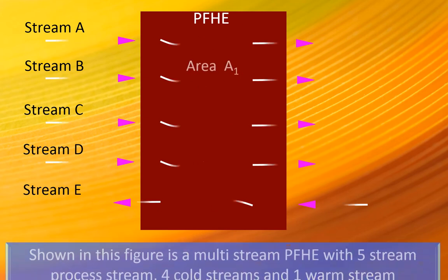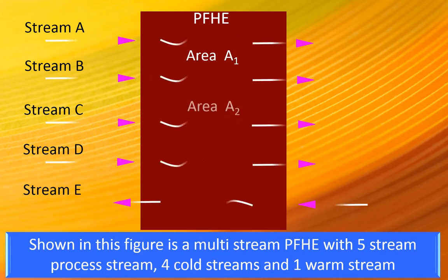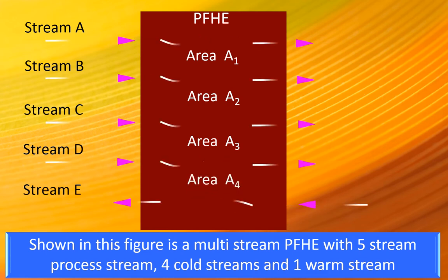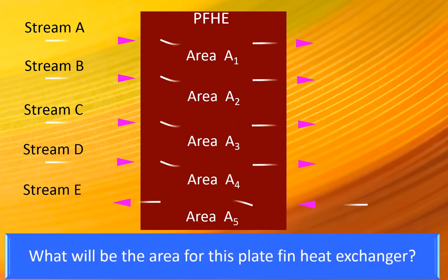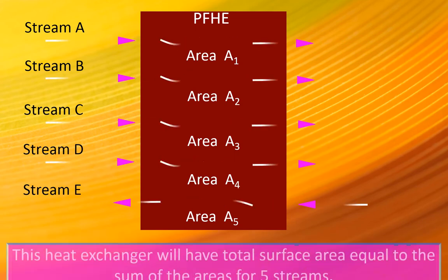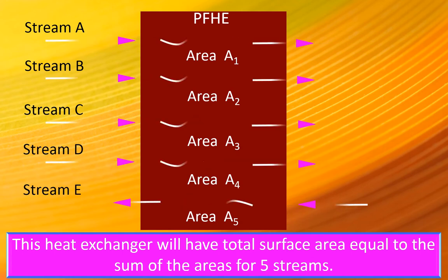For instance, consider a compact heat exchanger handling five process streams comprising one warm stream and four cold streams. The heat exchanger will have a total surface area equal to the sum of the areas for all five streams.